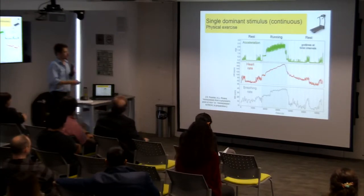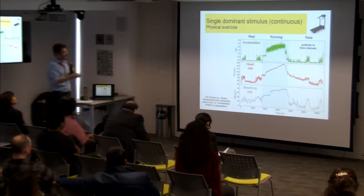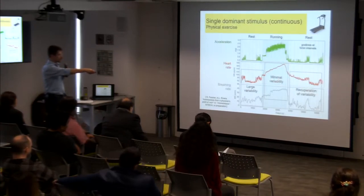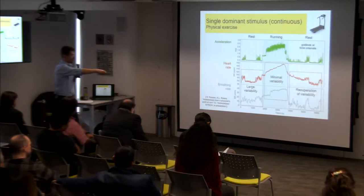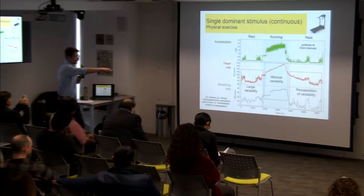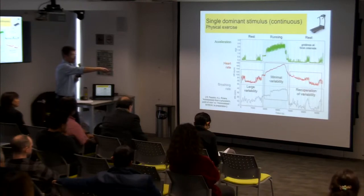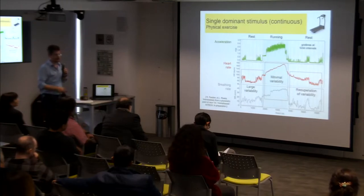So this was my first example of a single dominant stimulus, which is continuous. Large variability when we're in rest, minimal variability when focused on one single task. And then after exercise, when recuperating, not only does heart rate decelerate, but variability starts increasing and recovering again. You're recovering from this single difficult task and slowly start multitasking again.